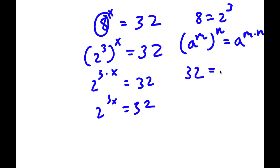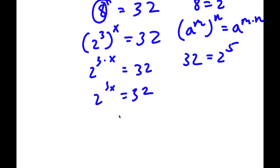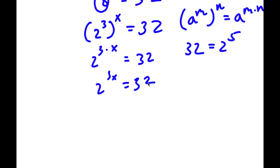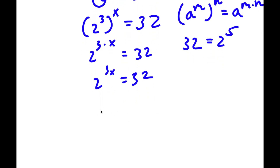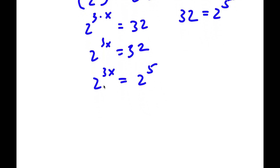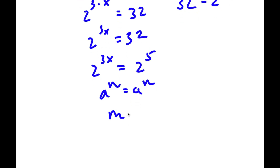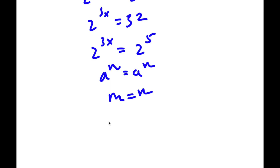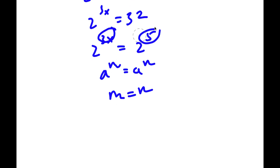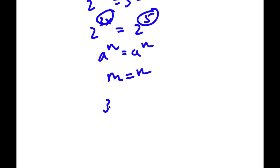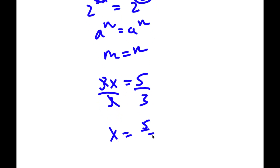Now 32 is the same thing as 2 to the power of 5. So I can replace 32 with 2 to the power of 5. Now I have 2 to the power of 3x equals 2 to the power of 5. Since the bases are equal, the exponents must be equal: 3x is equal to 5. Dividing both sides by 3, I get x is equal to 5 over 3.